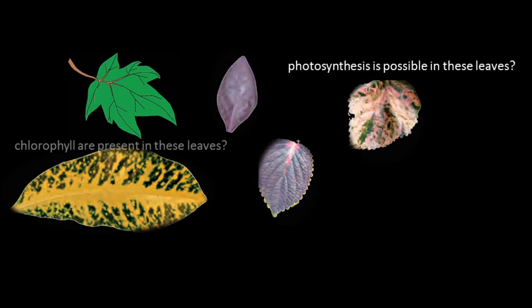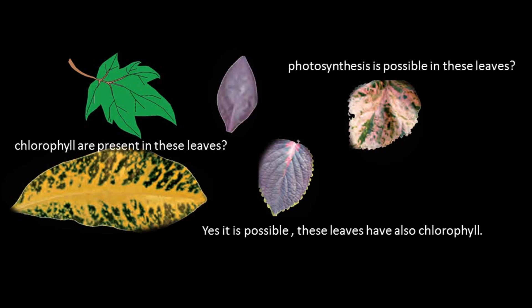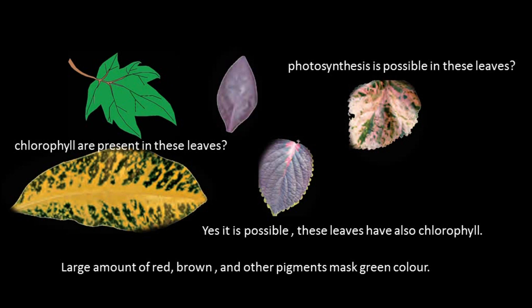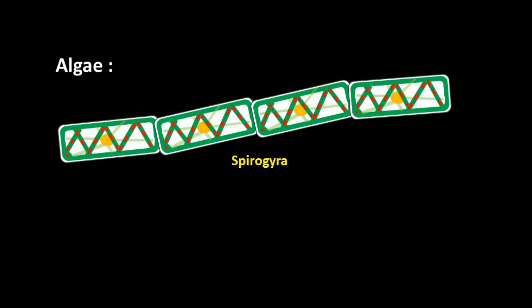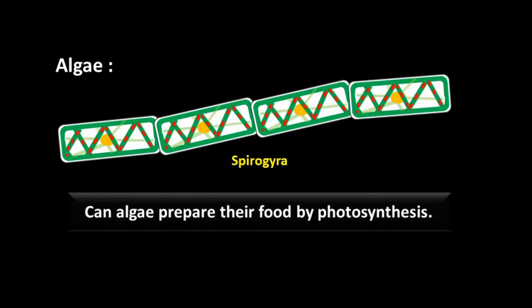Different colored leaves can also perform photosynthesis — they have chlorophyll, but other color pigments like red, brown, and others mask the green color. These leaves also synthesize food by photosynthesis. Algae is one example — it is green in color. An example of algae is Spirogyra, generally found in fresh water. Algae can prepare their food by photosynthesis because they have chlorophyll, so algae are autotrophs.